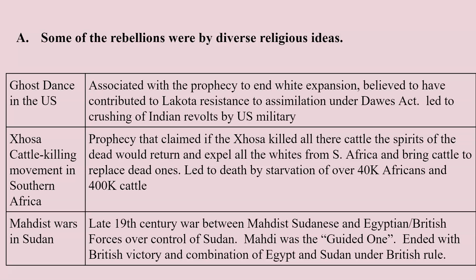Another example of religious-inspired resistance was the Xhosa Cattle Killing Movement in southern Africa. A prophecy made by a young girl claimed that if the Xhosa killed all their cattle, the spirits of the dead would return and expel the whites from South Africa, and new cattle would replace the dead ones. They followed the prophecy — but sadly nothing happened except that people starved. They killed approximately 400,000 cattle, cutting their food supply so dramatically that as many as 40,000 Africans died.